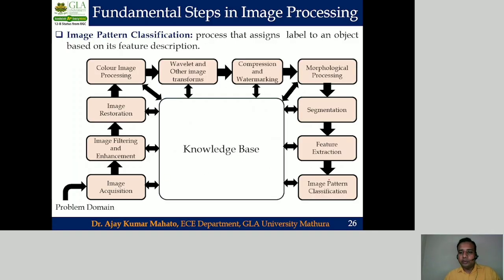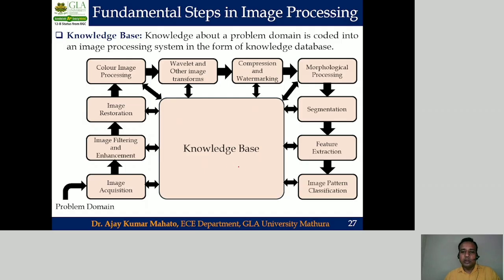The next step of digital image processing is image pattern classification, where we assign a label to an object. Lastly, in order to perform all these image processing operations — such as image enhancement, image filtering, image restoration, and color image processing — on a given digital input image, we need image processing software, an image processing system, and we have to write code and maintain a library. To perform all these operations we need a database known as the knowledge database.